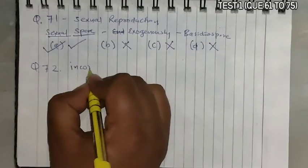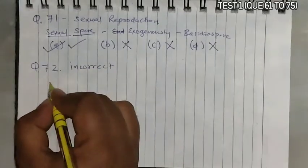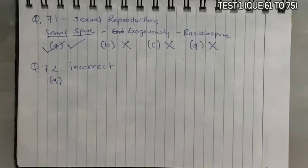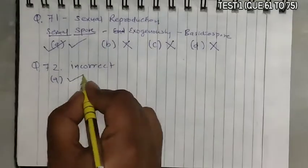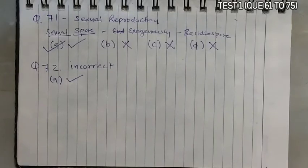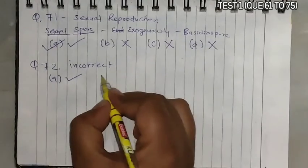Question 72: Choose the incorrect statement. Statement A: 'Penicillium is multicellular and produces antibiotics' — this is correct; Penicillium produces the antibiotic penicillin, obtained from Penicillium notatum. Statement B: 'Neurospora is used in the study of biochemical genetics' — correct; Neurospora is known as the Drosophila of the plant kingdom.